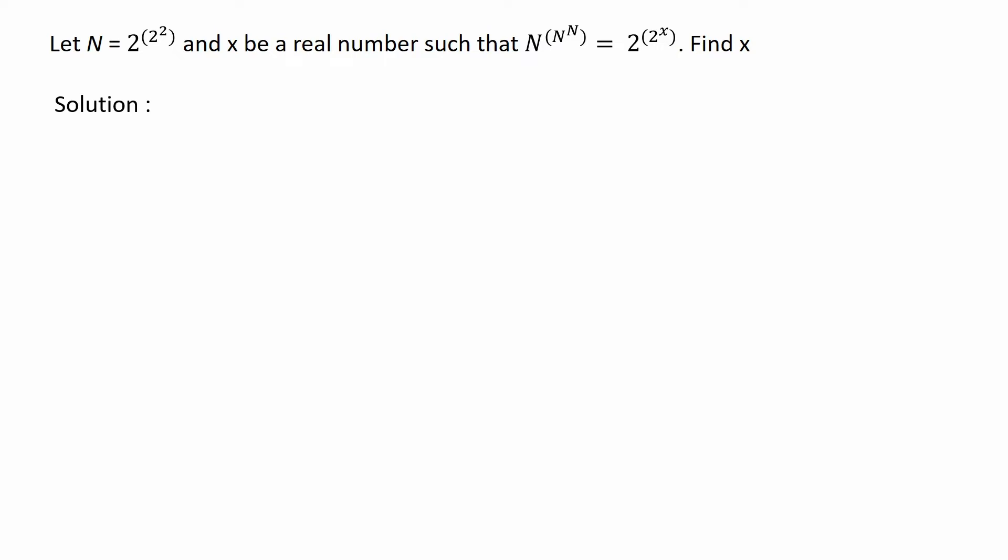Now I'm going to show you the solution systematically. First, you need to make a simplification for N, which is N to the quantity of 2 squared is equivalent to N to the 4. Then substitute it into our equation.